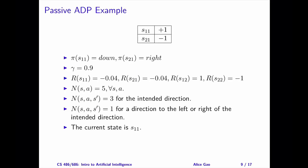Let me show you an example of tracing the execution of the passive ADP algorithm. Here's a 2x2 grid. There are two non-goal states, S11 and S21, and two goal states with rewards plus one and minus one. The agent is given the following: